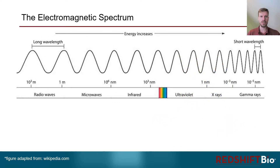This picture shows the electromagnetic spectrum all the way from the low energy radio waves up to the high energy gamma rays. In the center we find the visible range indicated by the rainbow colors. Next to the low energy end of the visible spectrum you can find the infrared region, which is used in FTIR.